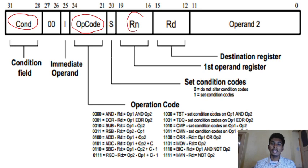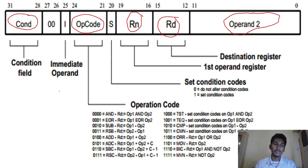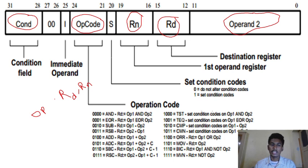Rn is the first operand, and Rd is the destination operand. Operand 2 is the second operand on which we want to perform the operation. So the general notation will be: destination, source operand like Rn, with the opcode — opcode, destination register, and the source register. This is actually the structure of how they are stored.